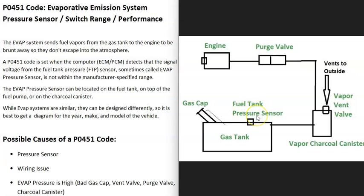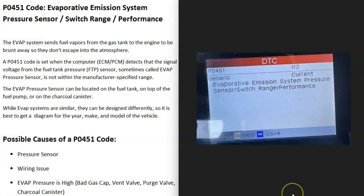All the gas vapors then go into the engine and get burnt away. There's also what's called a fuel tank pressure sensor, sometimes called the evap pressure sensor. Basically, this is what the computer uses to monitor the whole system — to be sure it's working, holding pressure, and that there are no leaks. When you get the P0451 code, the computer is seeing some kind of problem with this fuel tank pressure sensor.